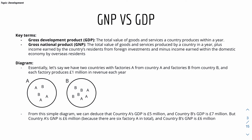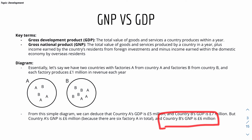Country B has a GDP of £7 million, as it has 7 factories within its borders. Whereas if we look at GNP — the Gross National Product — it's specifically concerned with a country's own factories regardless of location. So Country A has 3 factories in Country A and 3 factories in Country B, giving it a GNP of £6 million. Country B also has a GNP of £6 million, because it has 4 factories in its own country and 2 factories in Country A. That's the difference between GDP and GNP.